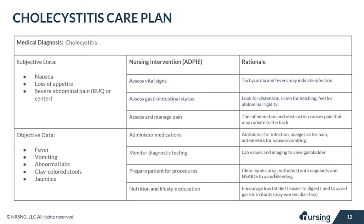Our last nursing intervention is to provide nutrition and lifestyle education. Encourage a low-fat diet because it's easier to digest, and avoid gastric irritants because they could worsen diarrhea. The diarrhea after gallbladder removal occurs because of the direct drainage of bile into the intestine from the liver — it no longer has the gallbladder to rest in, so it goes straight into the intestines causing diarrhea.